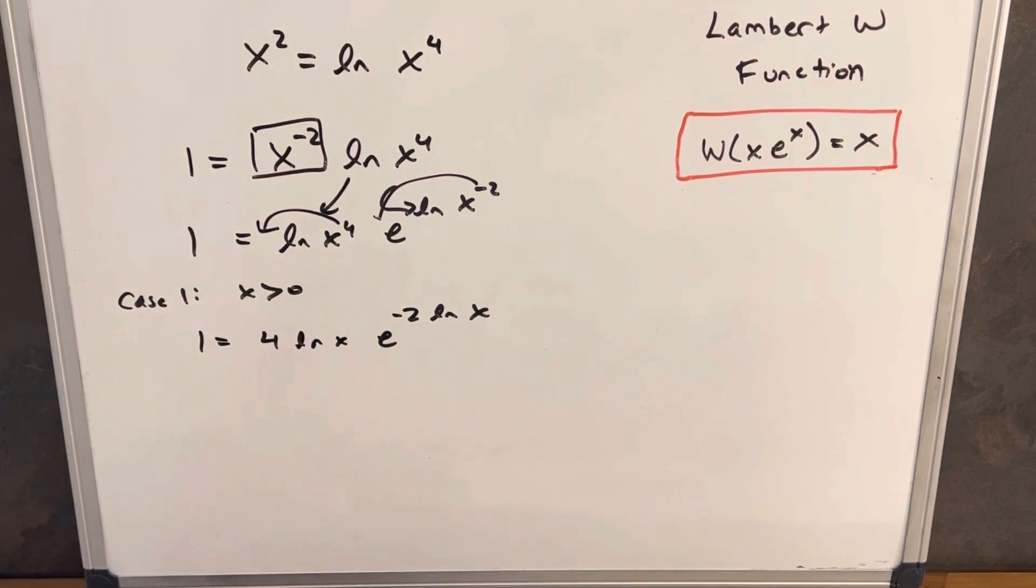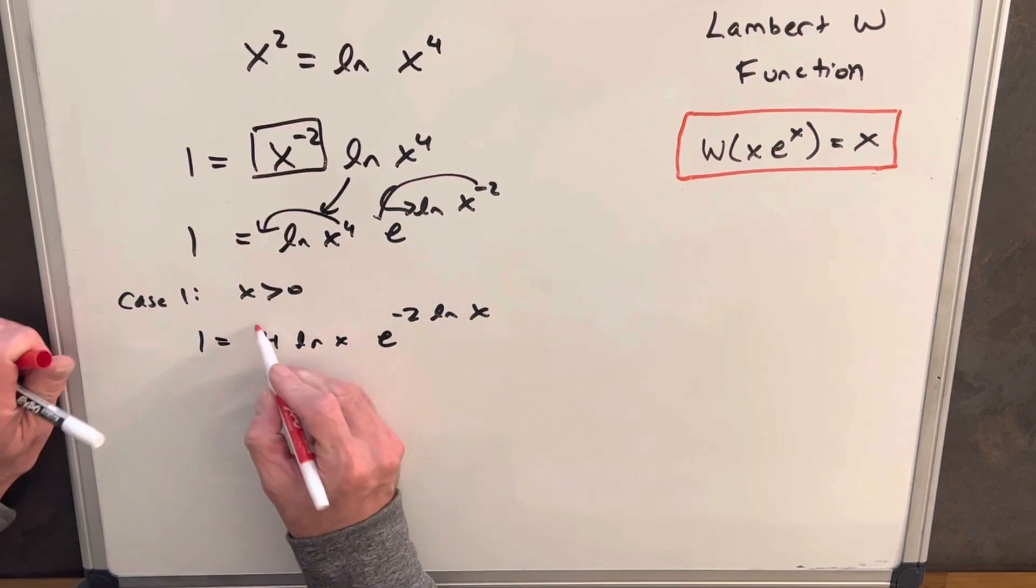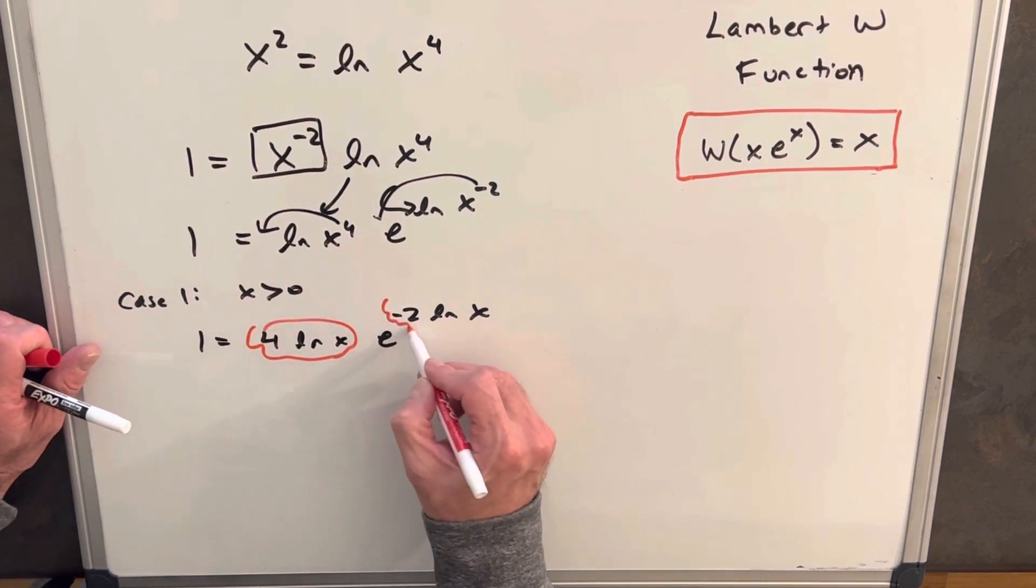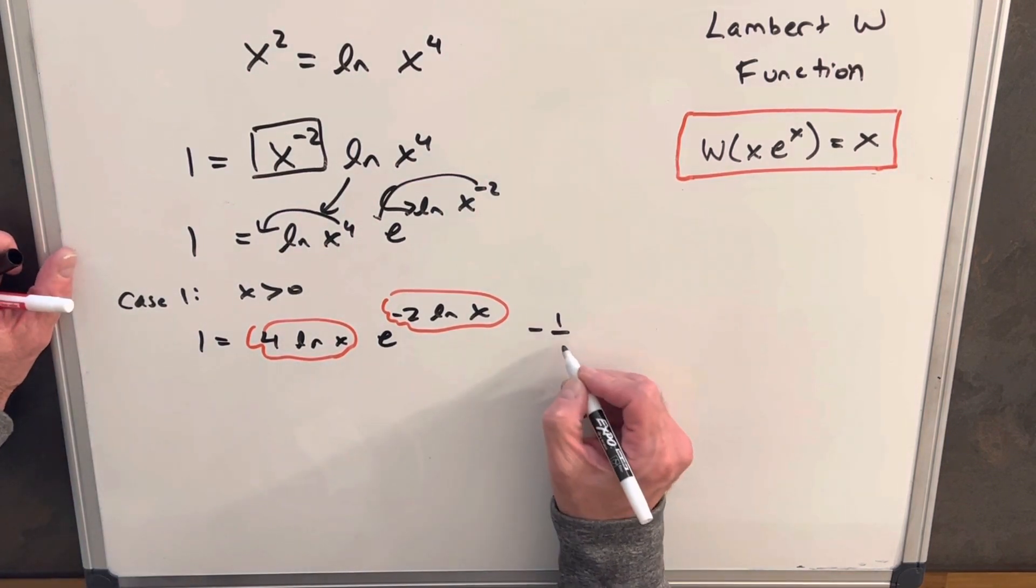And you'll notice we're actually getting pretty close to this, where we have, on both sides of the e, we have the natural log. We just have a difference of a constant. But fixing this 4 is going to be real easy, because all we need to do, we can multiply by minus 1/2.